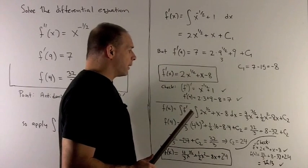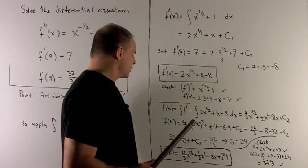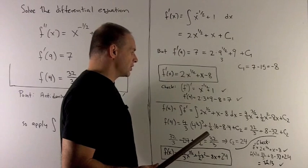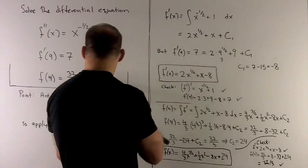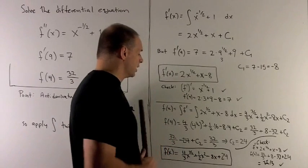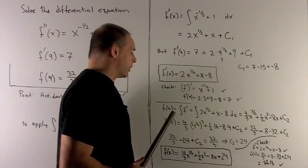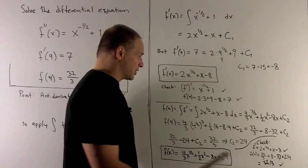So we want to figure out what c2 is, so I'm going to use two equations. We know that f of 4 is going to be equal to 32 thirds by our assumptions, but we can also get it by following our nose if we stick it into the equation we just solved for.